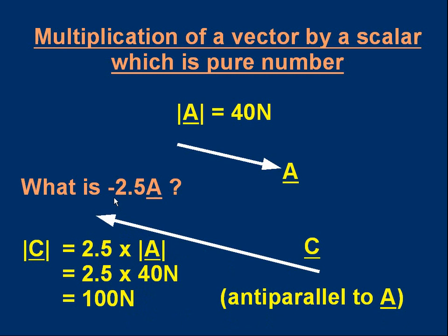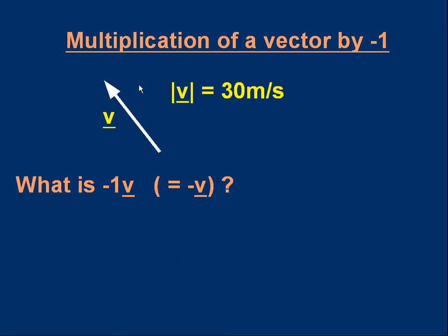Here's another very important example: what happens if we multiply a vector by minus 1? Here's an example velocity vector v in the direction shown, with a magnitude of 30 meters per second. What is minus 1 times v — which, as you can see, is exactly the same as asking: what is minus v?